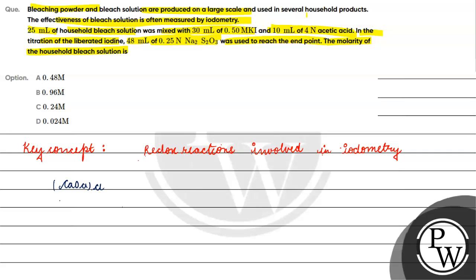In the reaction, bleaching powder liberates iodine from iodide. It will become Cl-, I2 will be liberated, and water will form.